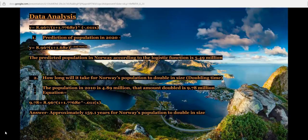We can take the function y equals 8.967 divided by 1 plus 1.776 A e to the negative 0.0546x and plug it in to different problems for future predictors. If we plugged in 2020 to find out the population of Norway in 2020, we would get 5.49 million.